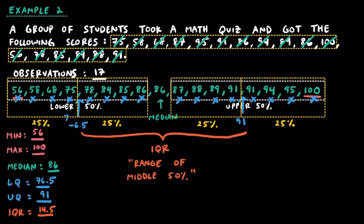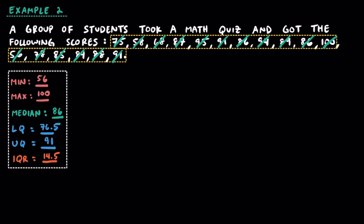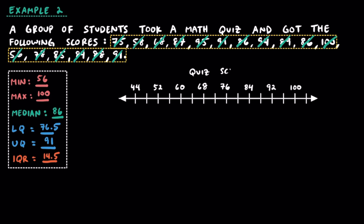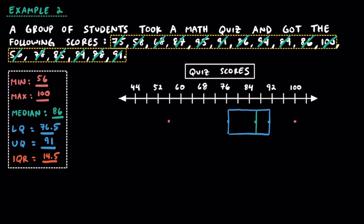Now let's make a box plot. I've created an evenly spaced number line and titled it 'Quiz Scores.' Here's the lowest score of 56, followed by the lower quartile of 76.5, then the median of 86, following we have the upper quartile of 91, and finally the maximum score of 100. Next, we draw a rectangle around the lower and upper quartile and draw a vertical line where the median is. To complete this box plot, we draw a horizontal line connecting the maximum to the upper quartile and another connecting the lower quartile to the minimum. A quarter of the class scored between 56 and 76.5, another quarter between 76.5 and 86, another quarter between 86 and 91, and the top 25% scored between 91 and 100.